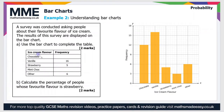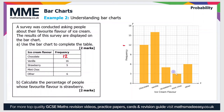Let's have a look at a second example. A survey was conducted asking people about their favourite flavour of ice cream. The results are displayed on the bar chart — use it to complete the table. All of the bars have been plotted and we're missing some data from the frequency column. The chocolate category goes up to 12, so the frequency is 12. The mint chocolate category goes up to 3, so that frequency is 3.